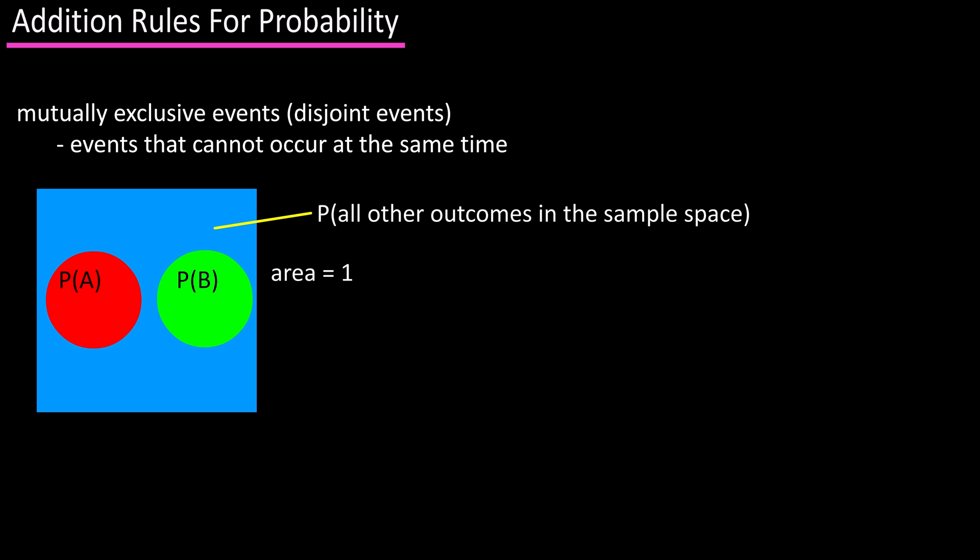In our diagram, A and B have no overlapping areas, meaning they cannot occur at the same time, so they are mutually exclusive. For instance, probability of A could represent rolling a 3 on a die, probability of B could represent rolling a 6 on a die, and the rest of the blue area would represent rolling a 1, 2, 4, or 5.